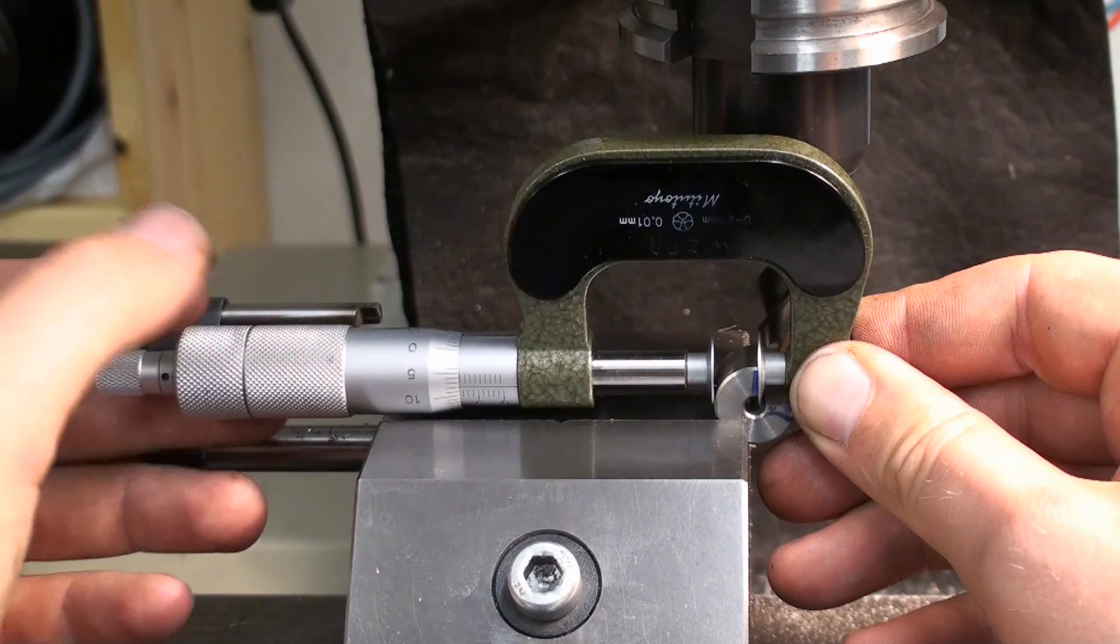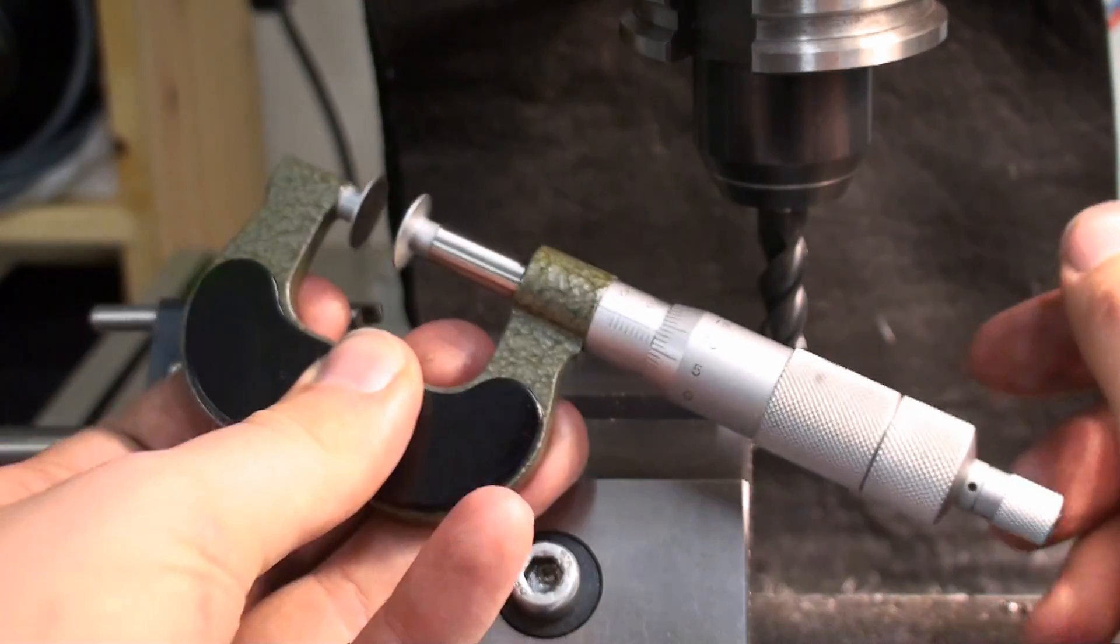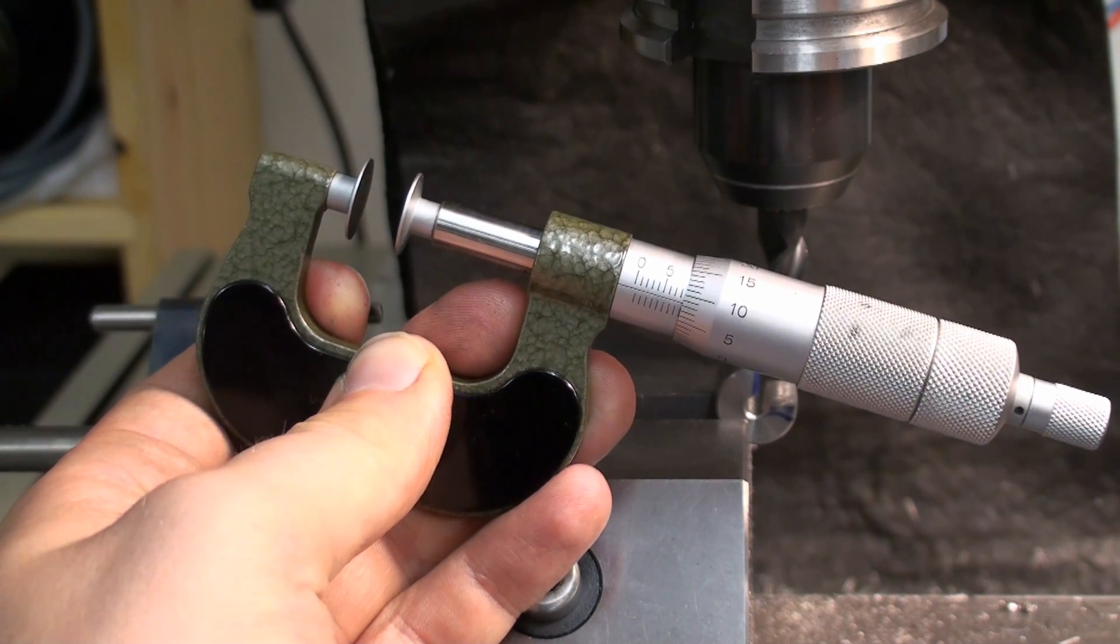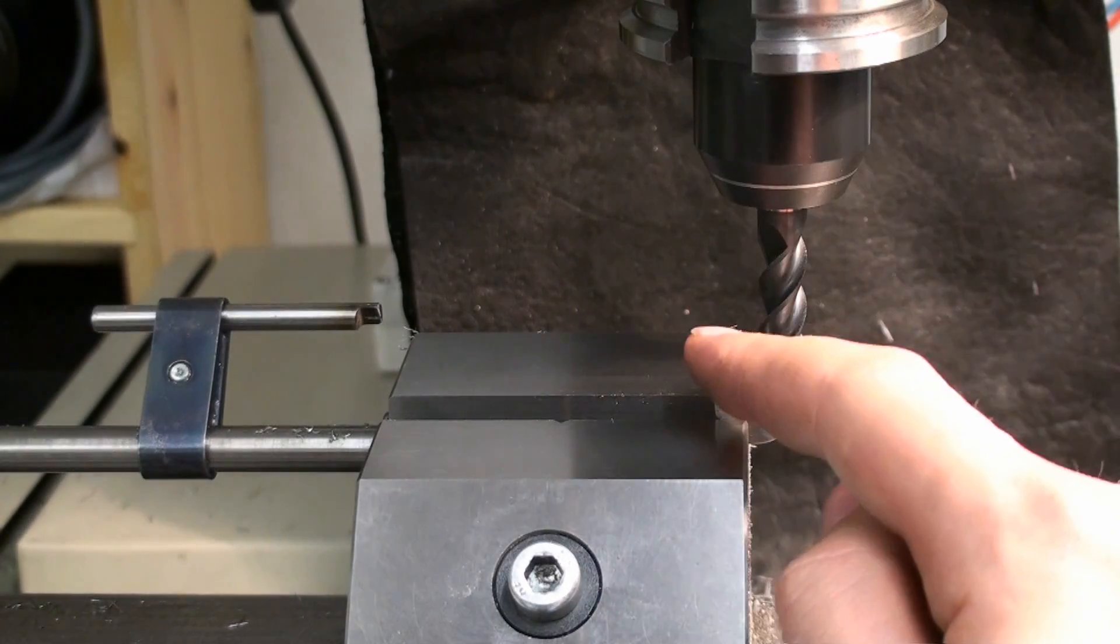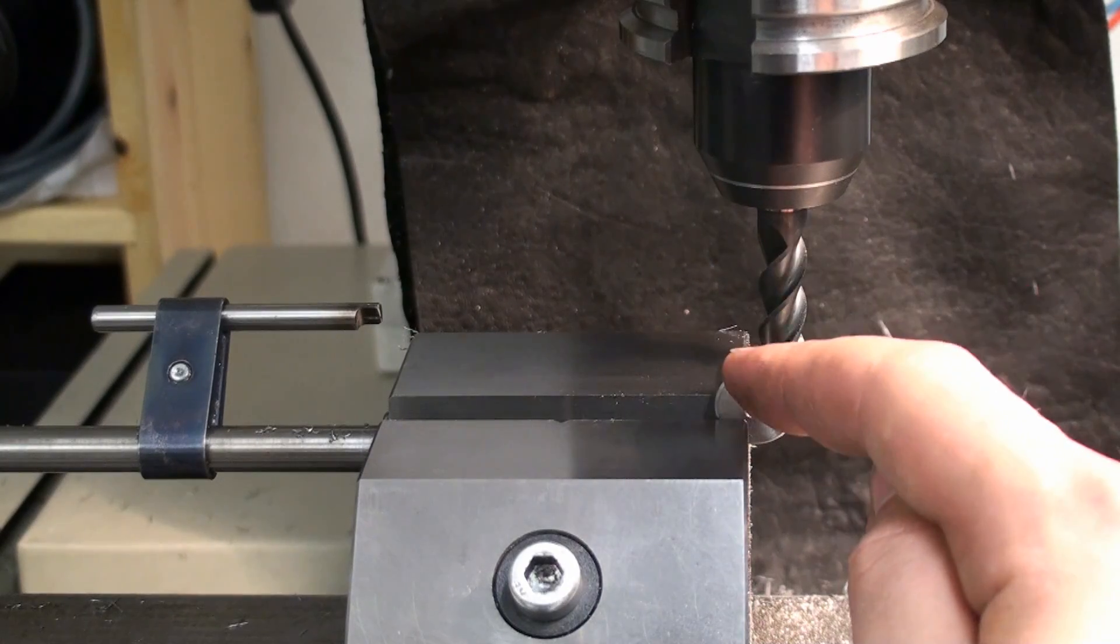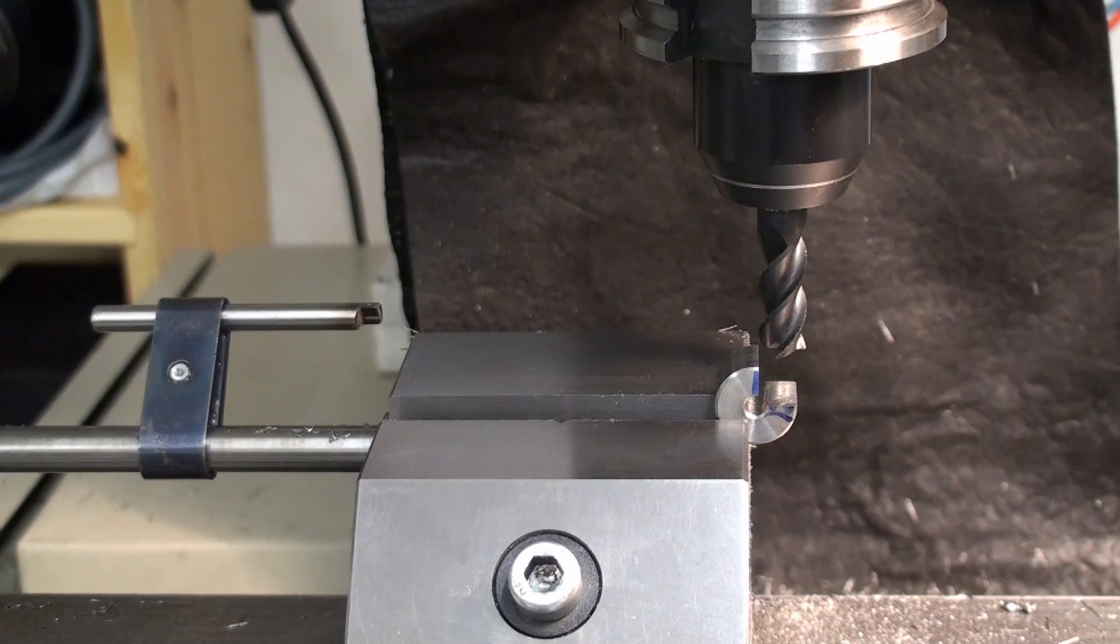Okay, this should be 8.58 millimeters thick and we want 8 millimeters. So let's take another 5.10 for a millimeter, measure again and then we will take a finish cut.